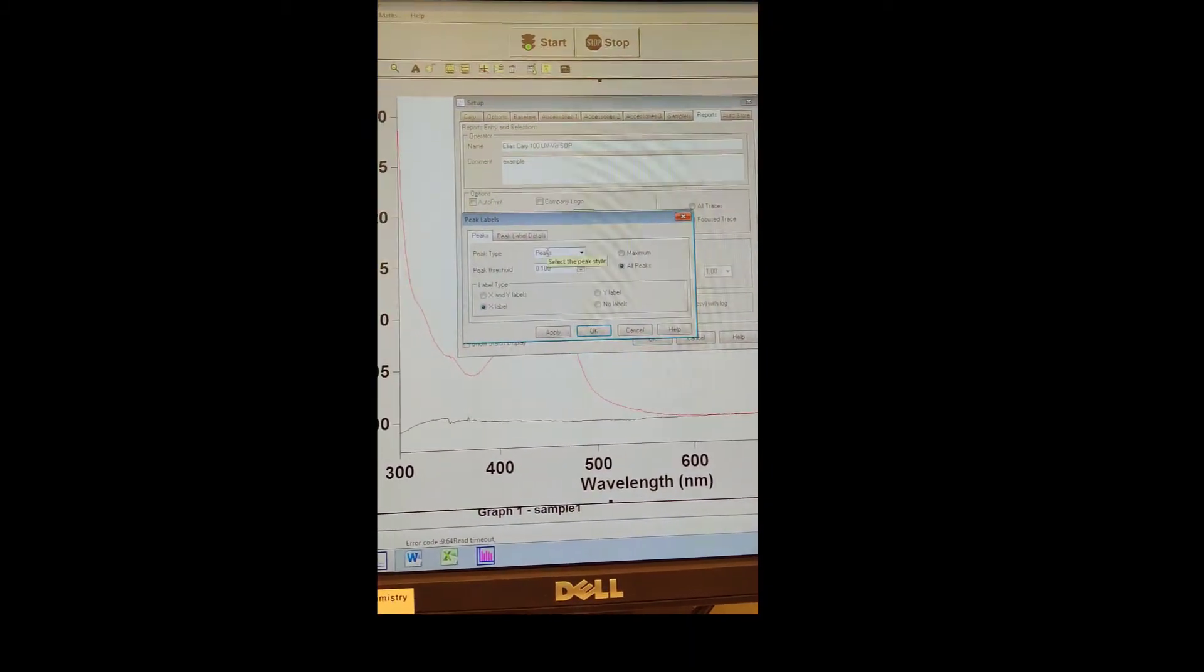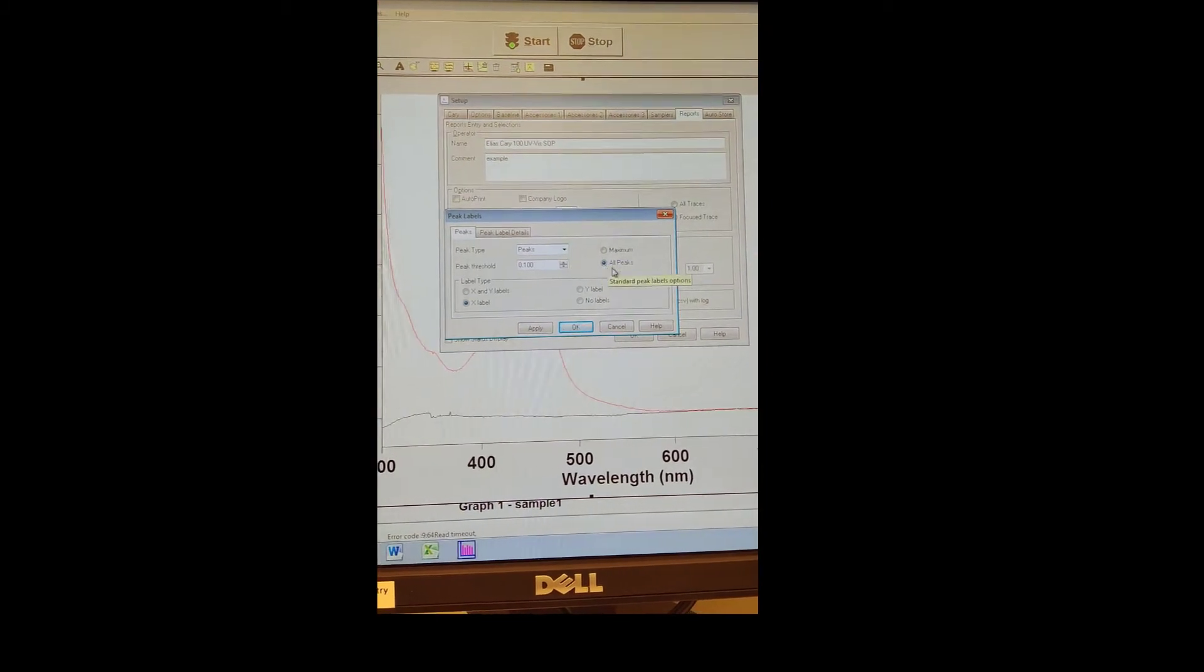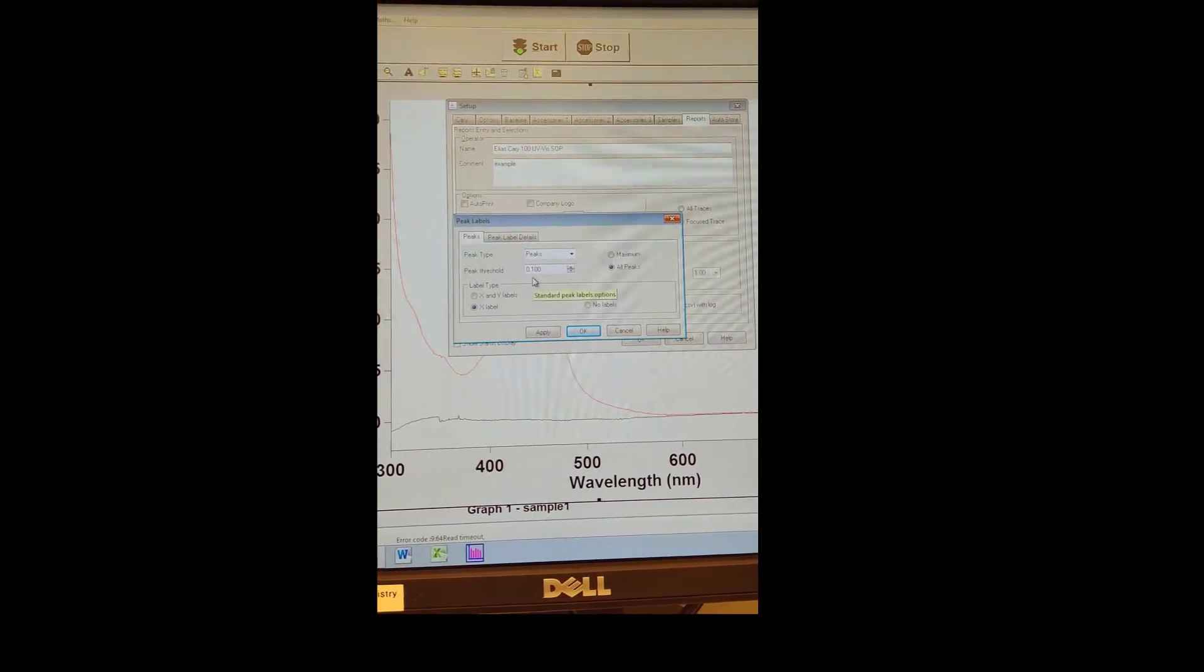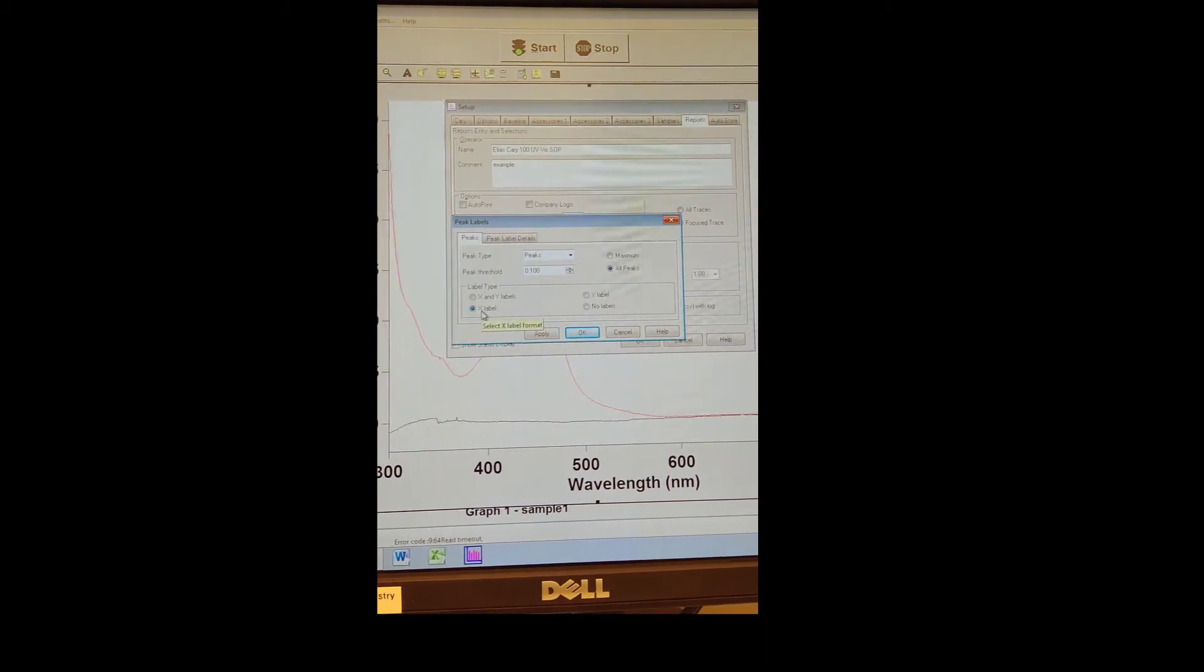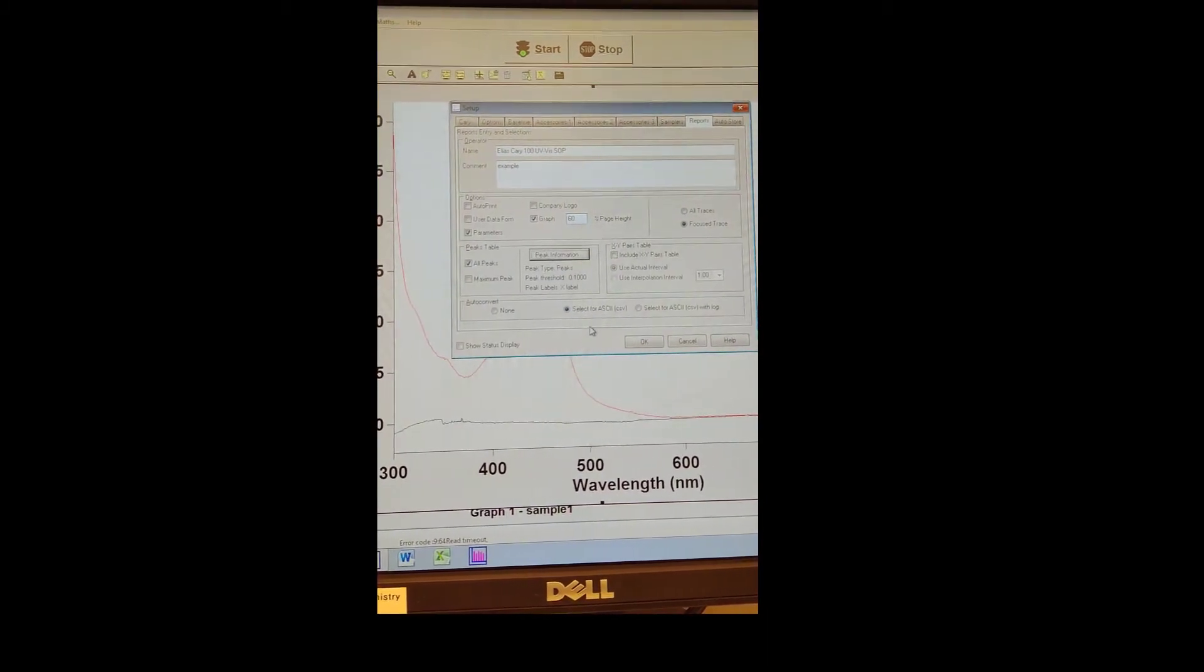Make sure Peak Types is all peaks. Go to Peak Information, Peak Type is peaks, all peaks, and Peak Threshold should be 0.1. Select X Label, or you could also select X and Y labels if you think that's easier.